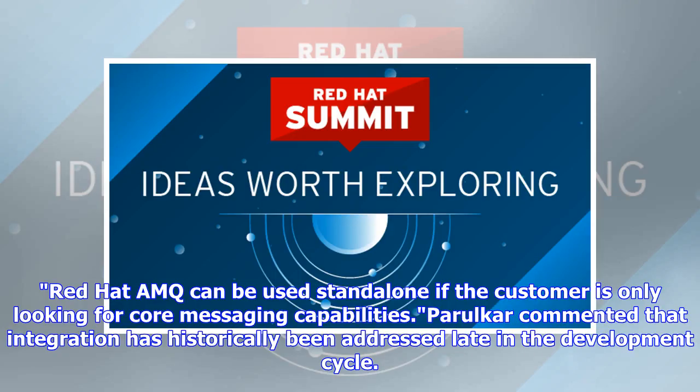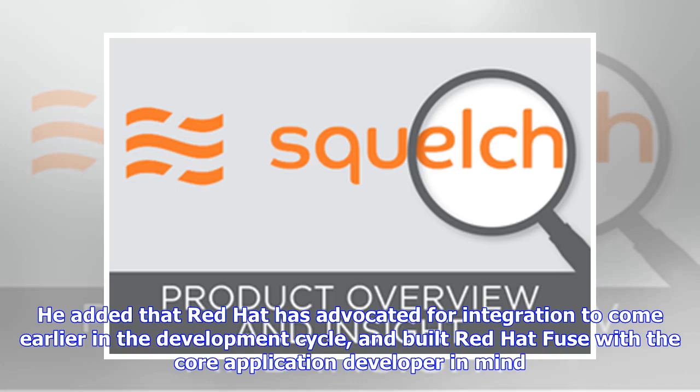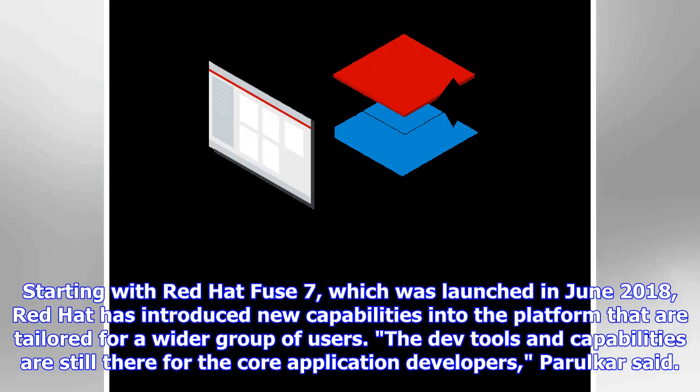Red Hat AMQ can be used standalone if the customer is only looking for core messaging capabilities. Paralkar commented that integration has historically been addressed late in the development cycle. He added that Red Hat has advocated for integration to come earlier in the development cycle and built Red Hat Fuse with the core application developer in mind, starting with Red Hat Fuse 7, which was launched in June 2018.